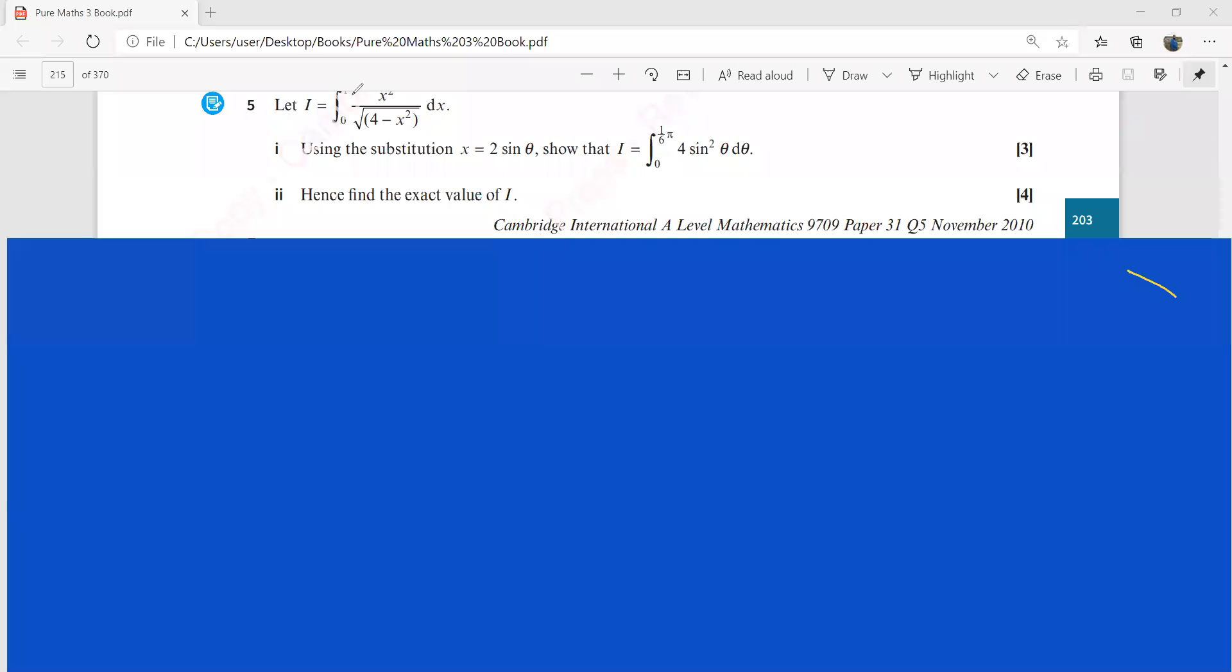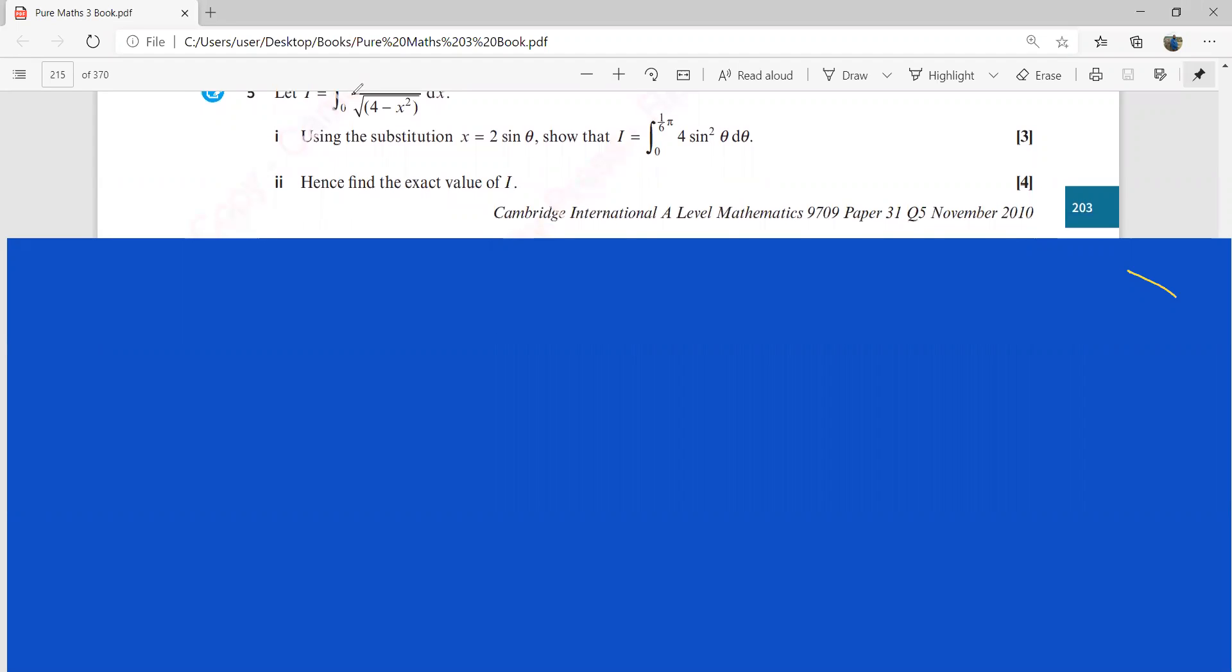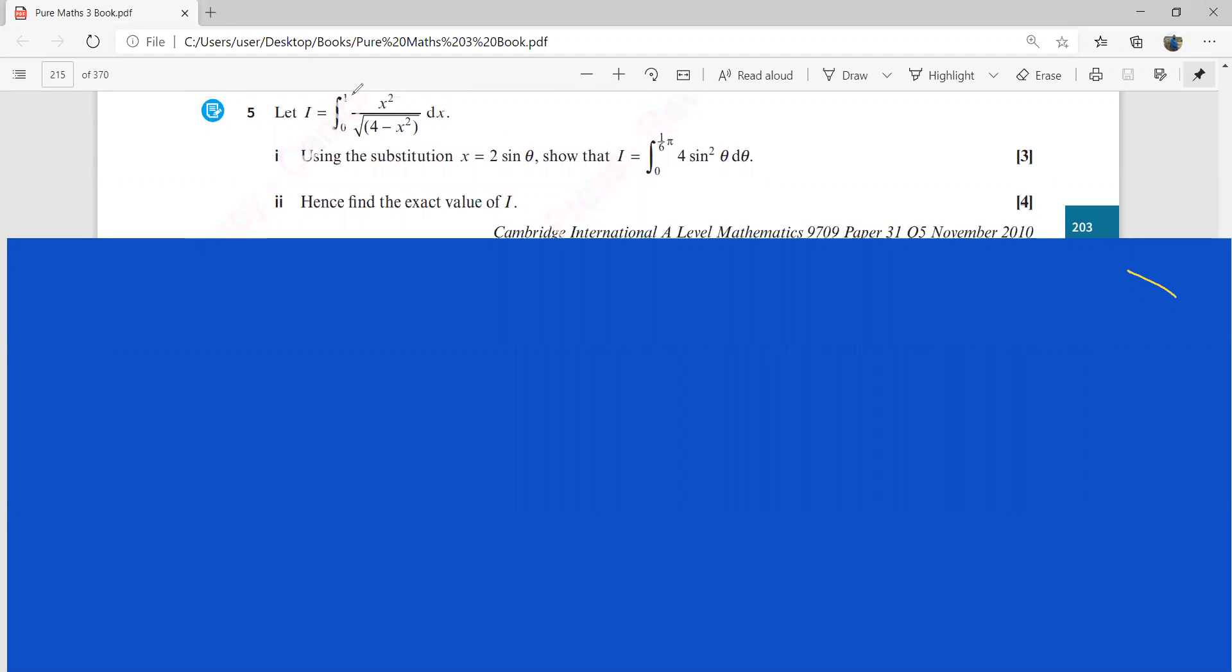Okay, we have a question on integration by substitution. This is from November 2010. We have been given a substitution here, which is x equals 2 sine theta, and we have to show this I as this I over here.